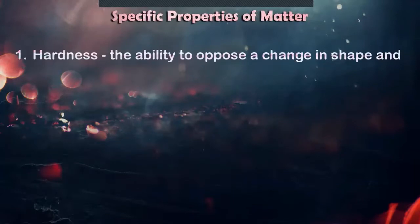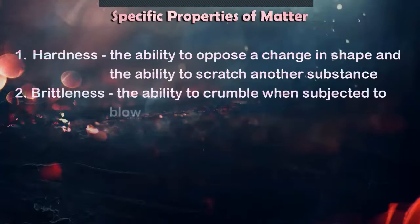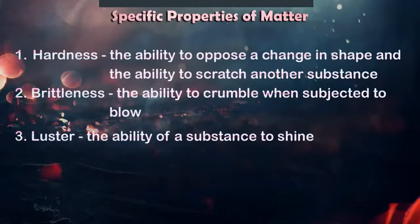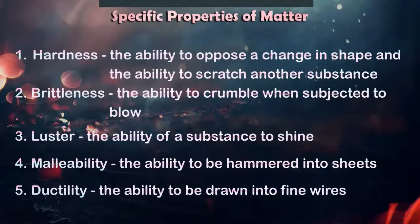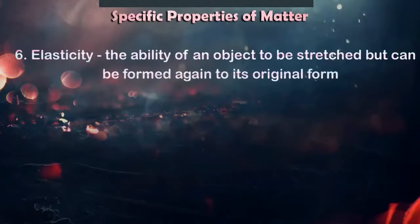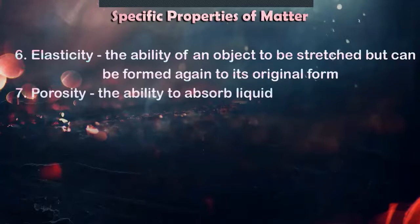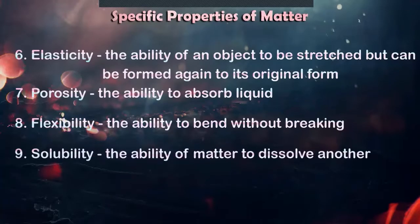For specific properties, we have hardness, the ability to oppose a change in shape and the ability to scratch another substance. Brittleness, the ability to crumble when subjected to blow. Luster, the ability of a substance to shine. Malleability, the ability to be hammered into sheets or be deformed. Ductility, the ability to be drawn into fine wires. Also, we have elasticity, its ability to be stretched but can be formed again to its original form. Example: rubber band. Porosity, the ability to absorb liquid. Flexibility, its ability to bend without breaking. And lastly, solubility, the ability of matter to dissolve another material.